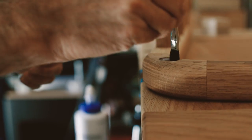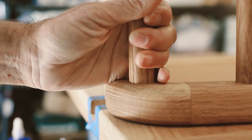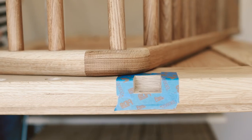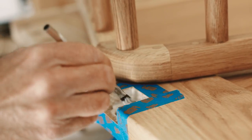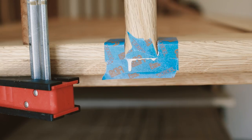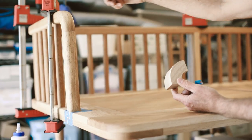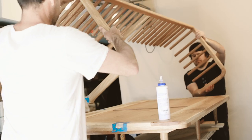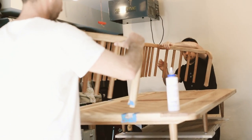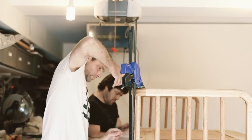We were able to incorporate the Shaper Origin into several parts of the process. We used it to create the mortises here. We used it to create these rounded shapes that create the rounded line of this back support, right here, like that. And also to make the 90 degree angles of the curves.